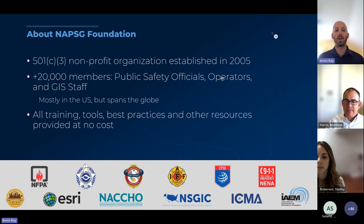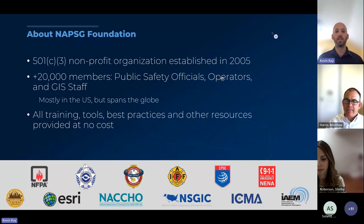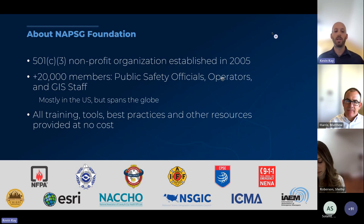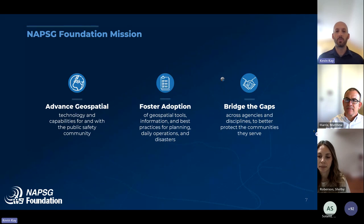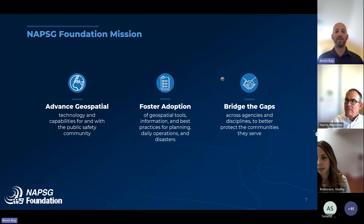NAPSIC Foundation is a 501(c)(3) nonprofit organization now running 20,000-plus strong of public safety officials, operators, and GIS staff — mostly in the US but also international. Everything we do — training, tools, and best practices — is available at no cost. Our core mission is to advance geospatial technology and capabilities for and with the public safety community, informed by people doing the work on the ground. We foster adoption of geospatial tools for planning, daily operations, and disasters — blue sky and gray sky.